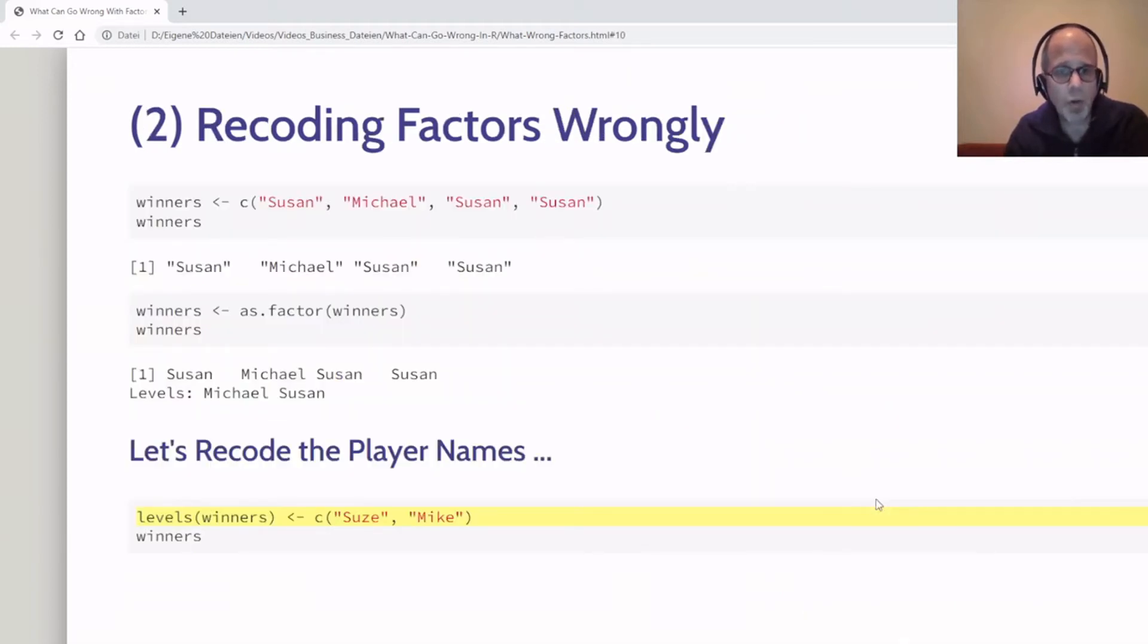These are several solutions for the first challenge with invalid factor levels. Let's look at the second challenge: recoding factors in the wrong way. It's a new example—let's say Susan and Mike played a game, or a couple of games, and they record who won each game in a vector called winners. We see Susan won three of the four games and Michael only managed to win the second game. This is first a character vector, but then we convert it to a factor using the as.factor function.